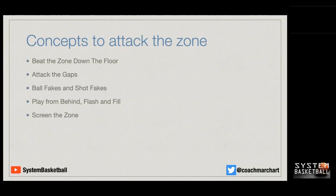You could screen the bottom of the zone, screen the wing, and have players cut from the wing to the high post. You could screen the top of the zone. You can do various different things to distort the zone by screening it — you can even ball screen it.